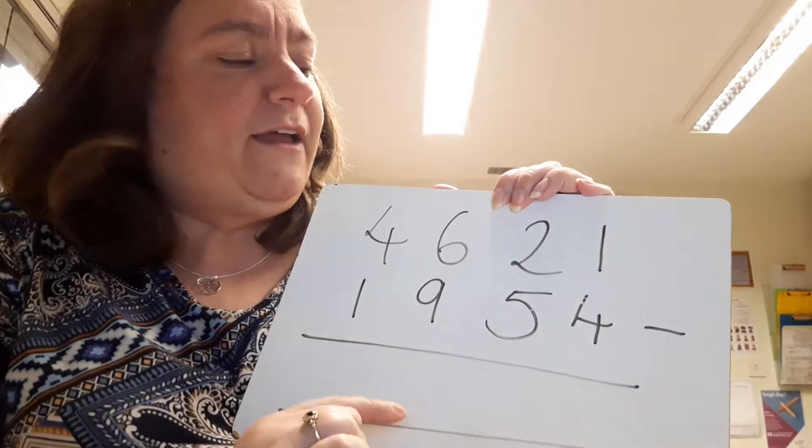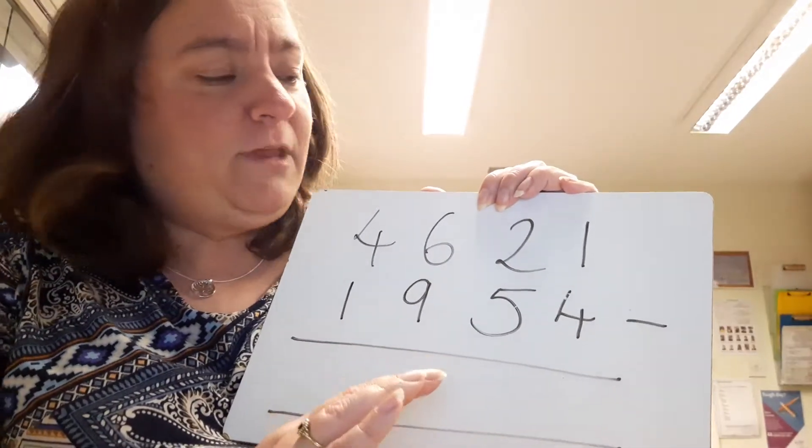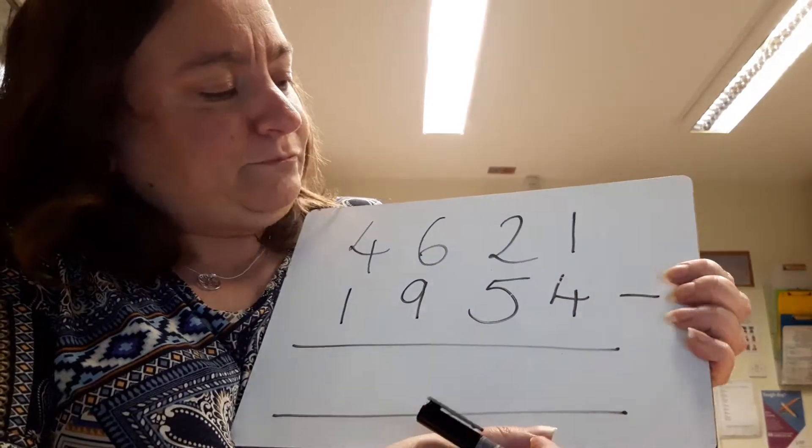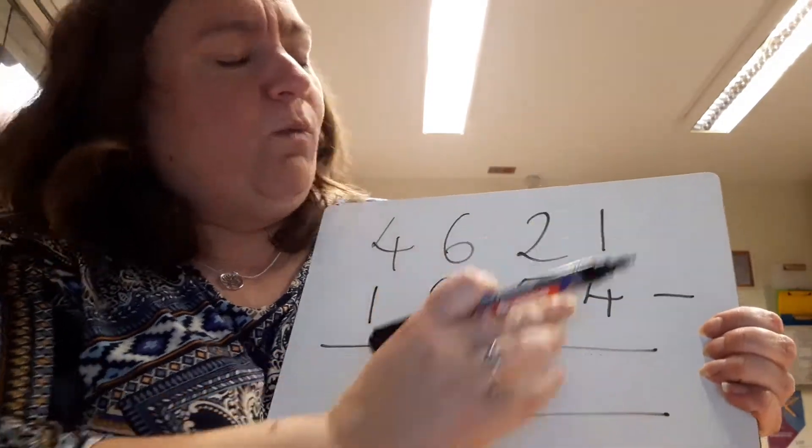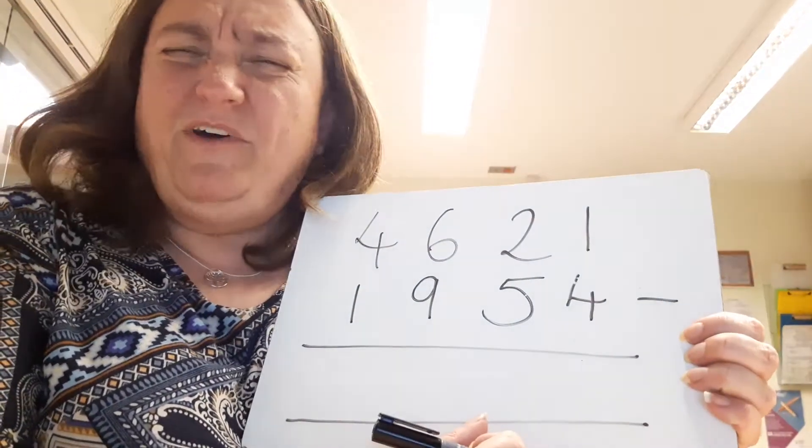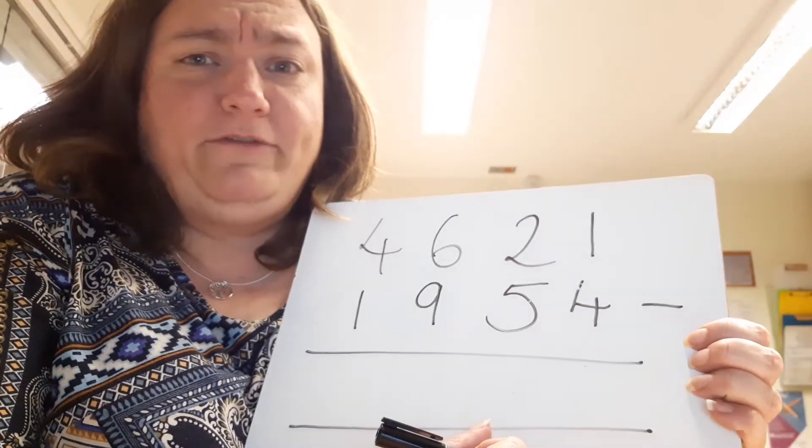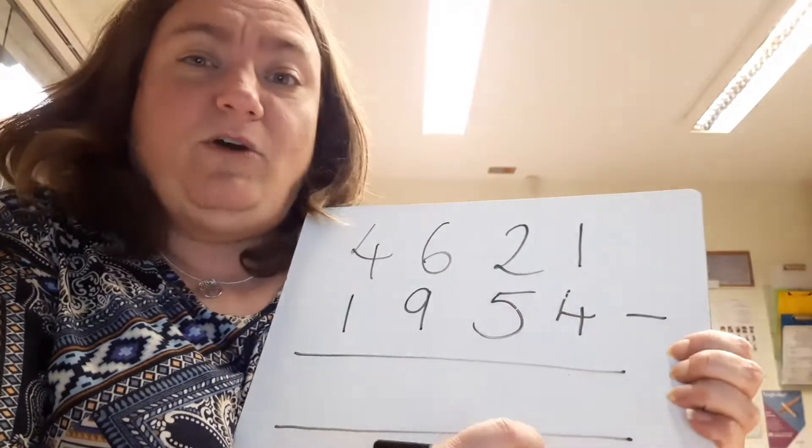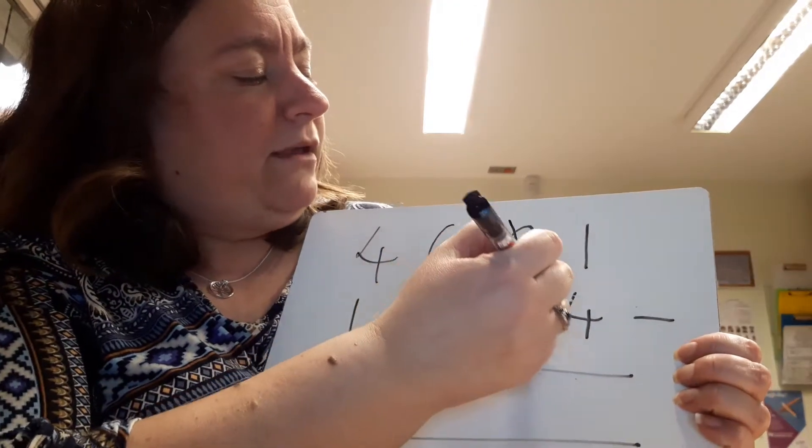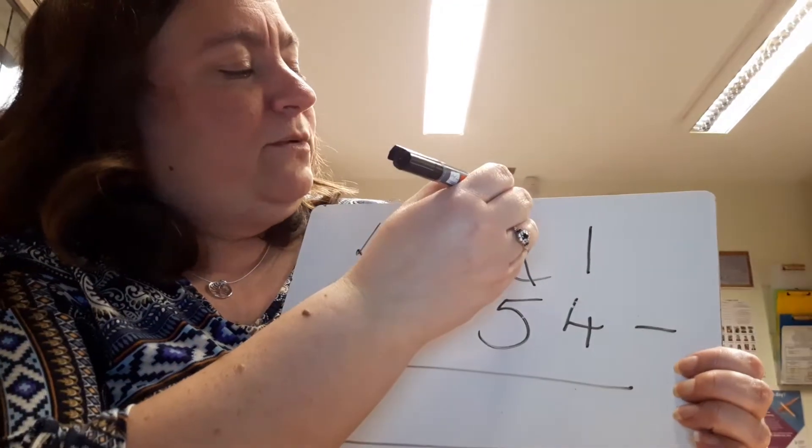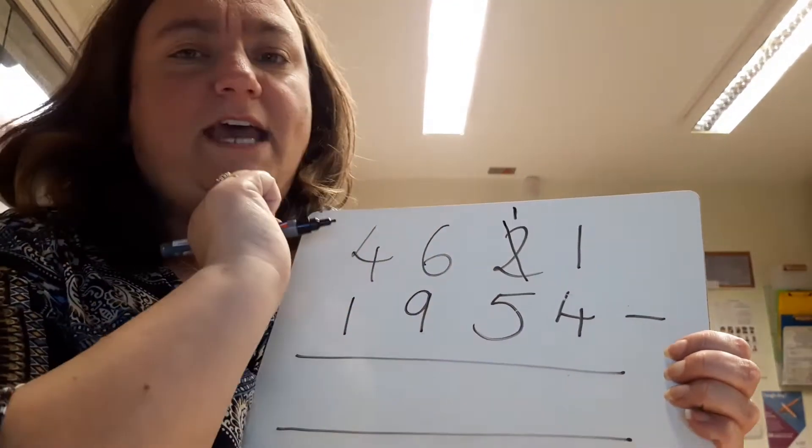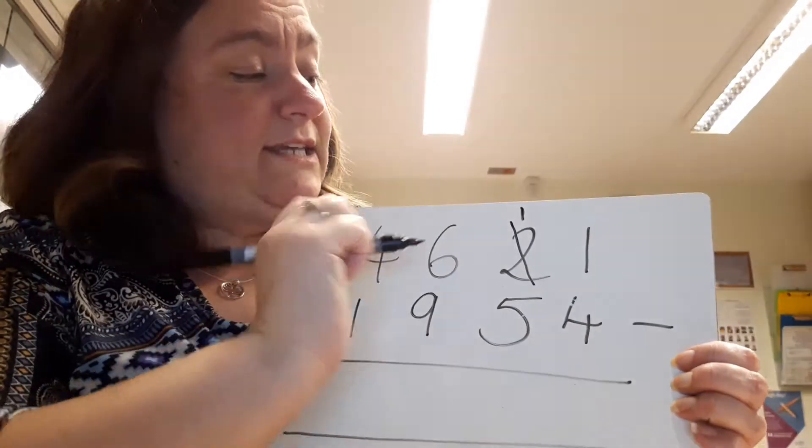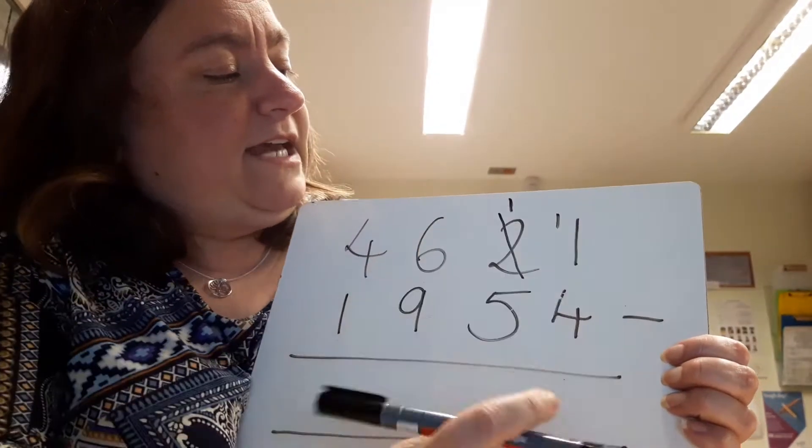So do check that before you start anything else. Right, now we're going to go over here and we're going to subtract one from four. Now I can't do that, I don't have enough. However, my tens column does have enough, so I'm going to do some borrowing. I'm going to ask him if he will give away one of his tens.